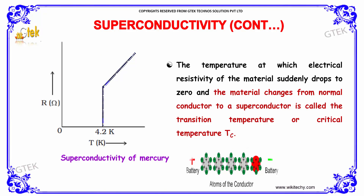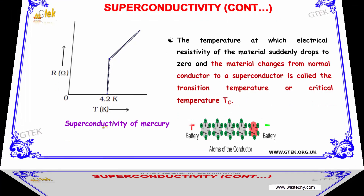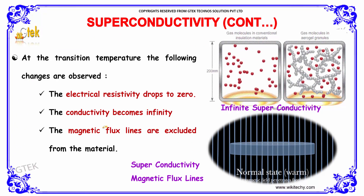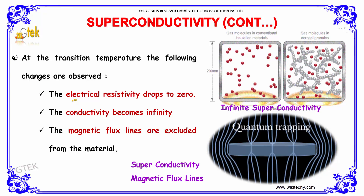Moving further, we are going to talk about the transition temperature. The temperature at which the electrical resistivity of a material suddenly drops to zero — as you can see here — and the material changes from a normal conductor to a superconductor, is called the transition temperature or critical temperature. Here I'm showing the superconductivity of mercury, which reaches zero resistance at 4.2 Kelvin.